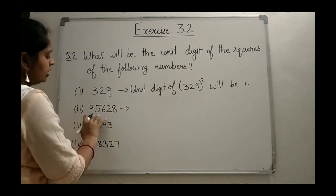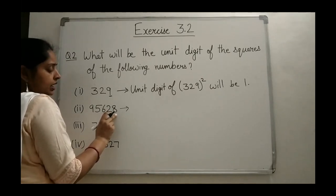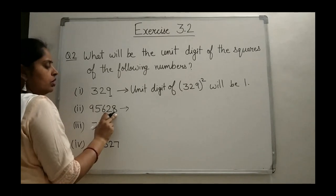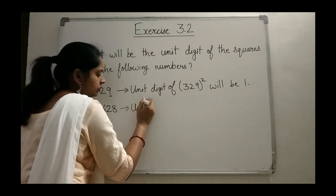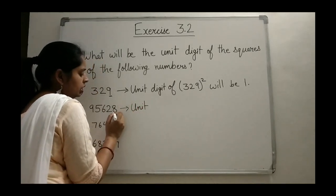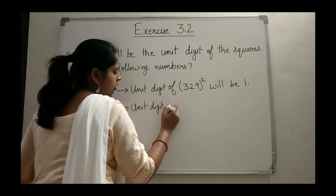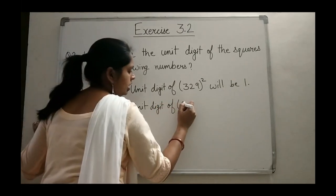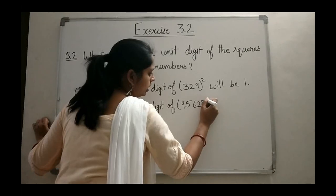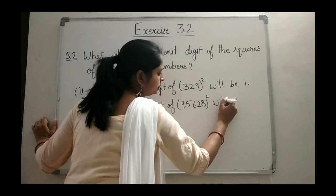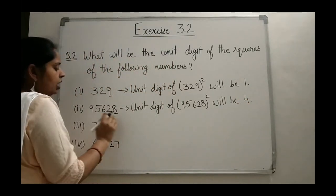For the number 95,628, the number is ending by 8. The square of 8 ends in 4 because 8 × 8 = 64. So the unit digit of the square of 95,628 will be 4. You always have to look at only the unit digit.